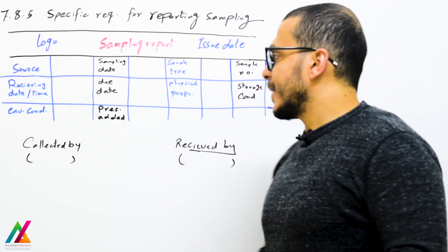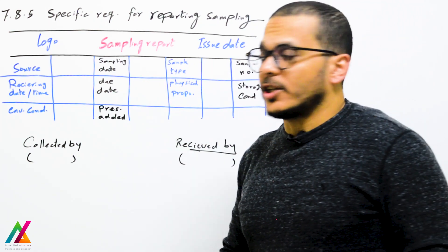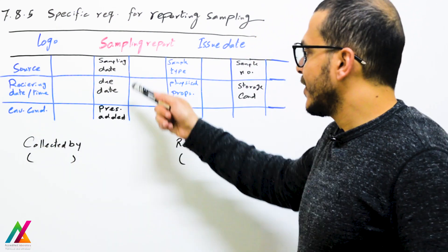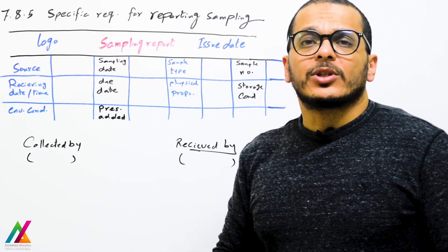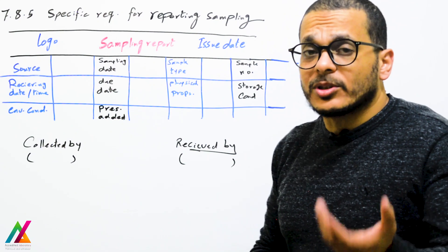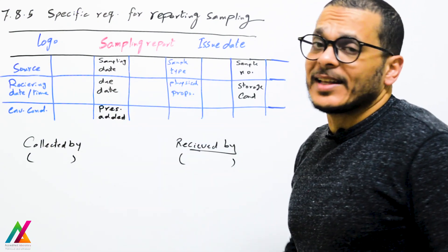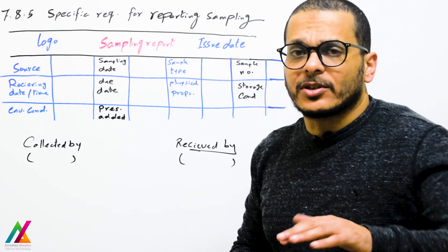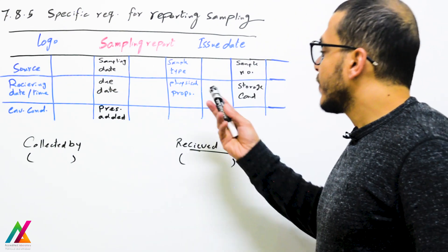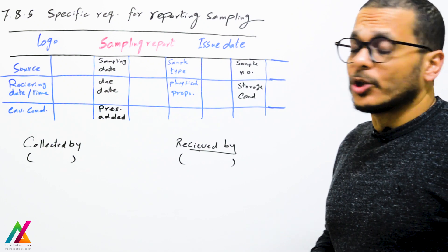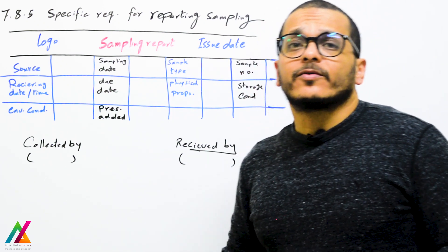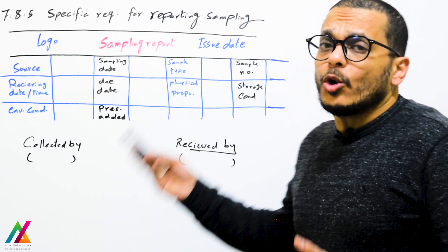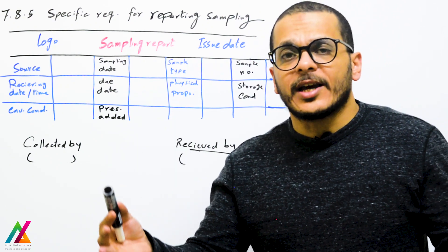Also required: sampling date or collection date. For the due date, you can just record the receiving date — there is no need for a separate due date, because each unit in the lab knows what time is required for parameters to be analyzed. The preservative added, if any, before or after sampling; physical properties of the sample; sample number; and storage conditions required to keep the sample during transportation and after receiving it.